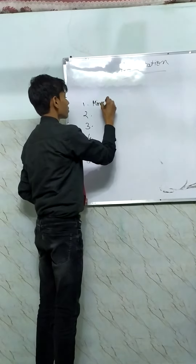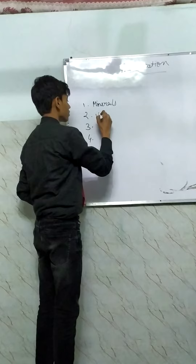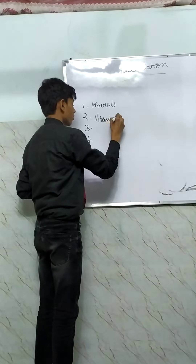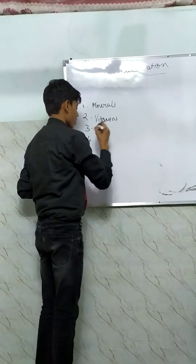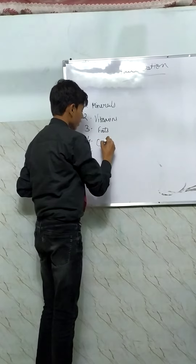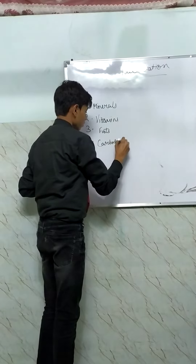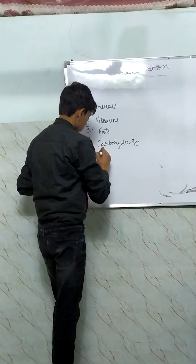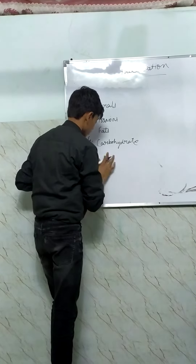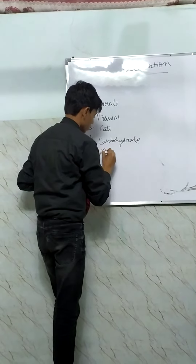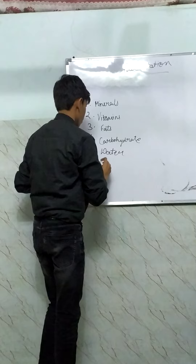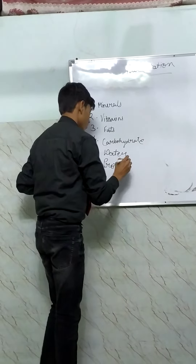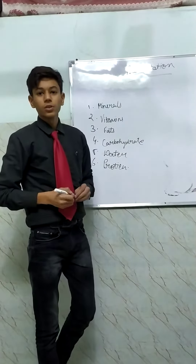The 6 types of Nutrition are: Minerals, Vitamins, Fats, Carbohydrates, Water, and Protein. These are the 6 types of Nutrition.